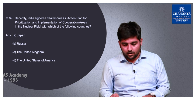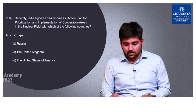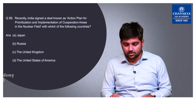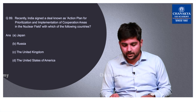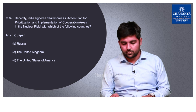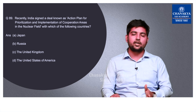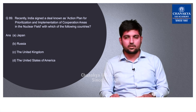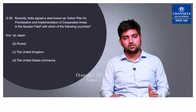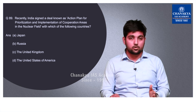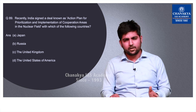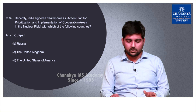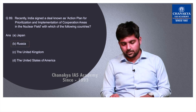Question number 89 asks about a deal known as the Action Plan for Prioritization and Implementation of Cooperation Areas in the Nuclear Field, which India recently signed. If you are reading current affairs diligently and following newspapers thoroughly, you will easily recognize the right option. The correct option is B — Russia.